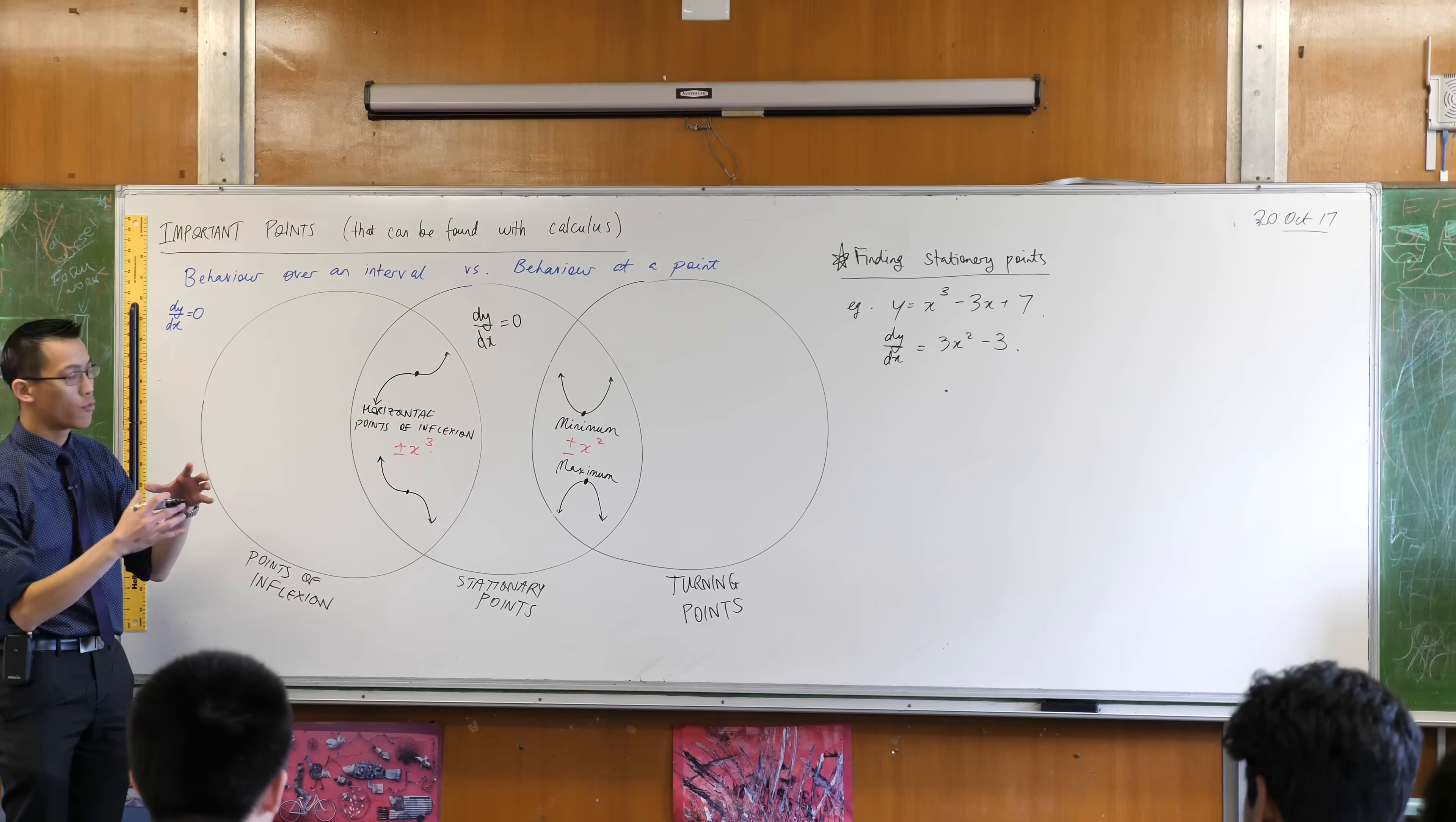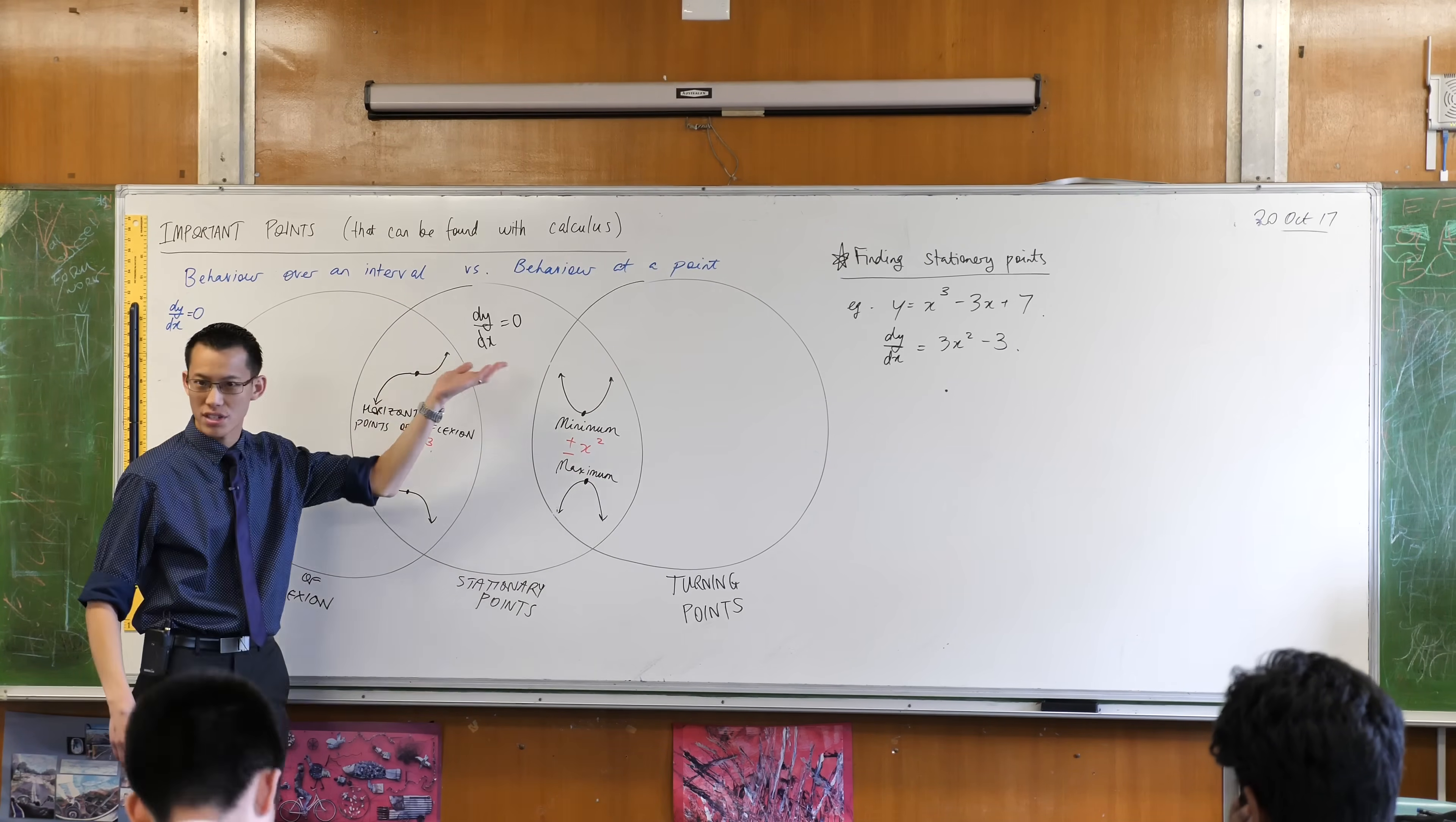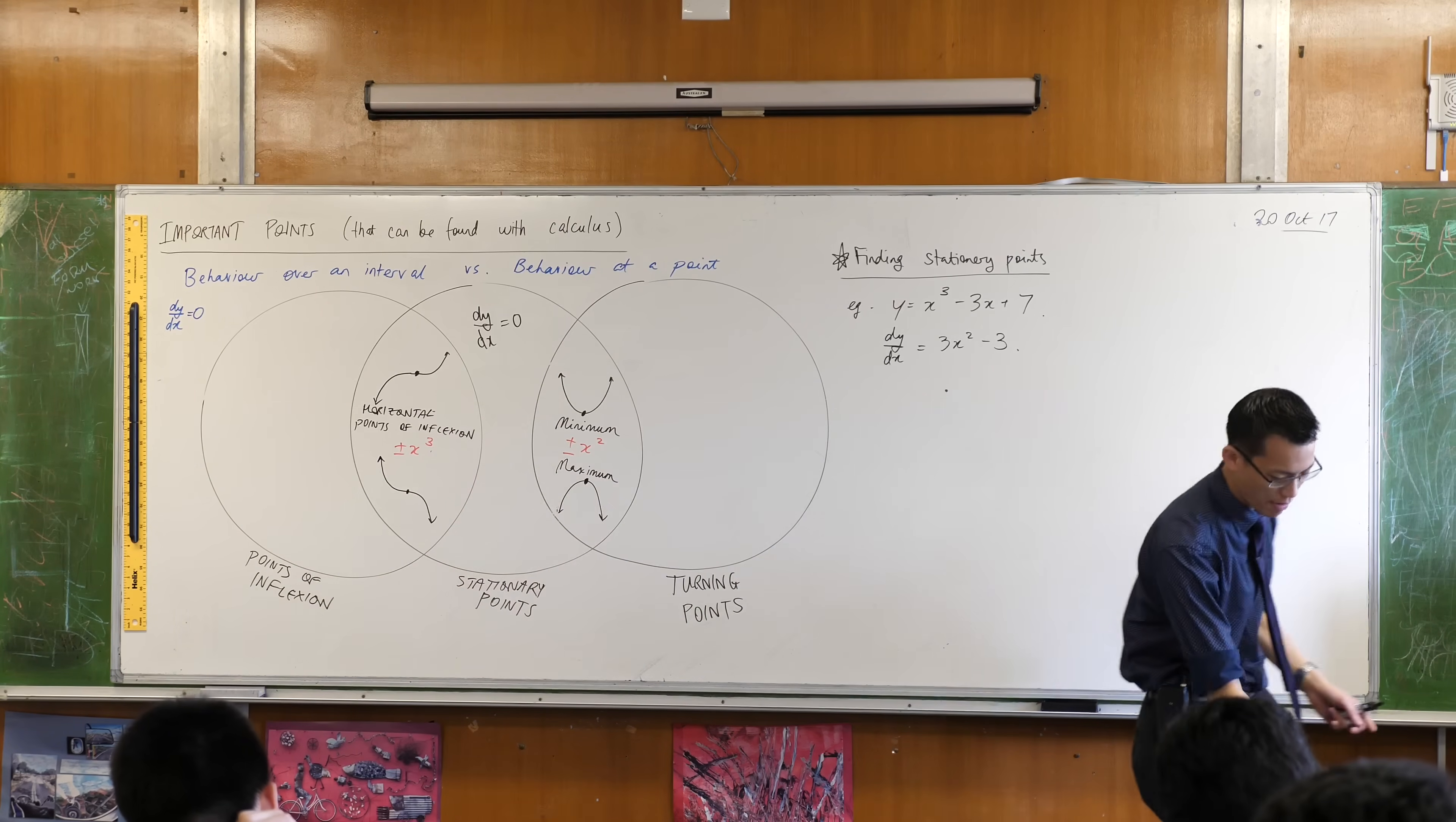Now remember I said to you the thing that all of these stationary points have in common is that dy/dx equals 0 at those stationary points. Very important to note dy/dx obviously isn't always 0 all the time - over here dy/dx would be negative, over here it would be positive. So a lot of people don't write this. Please, please, please do not write this.